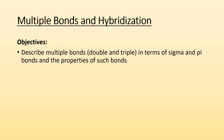How's it going, ladies and gentlemen? Mr. Doniu here again. This time we're going to take a look at multiple bonds and hybridization. So our objectives will be to describe multiple bonds, meaning double and triple bonds, in terms of sigma and pi bonds and the properties of such bonds.